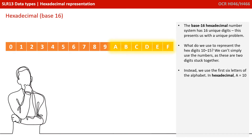So in hex, we have 16 unique digits representing 0 to 15: 0, 1, 2, 3, 4, 5, 6, 7, 8, and 9, and then A representing 10 from decimal through to 15 for F.